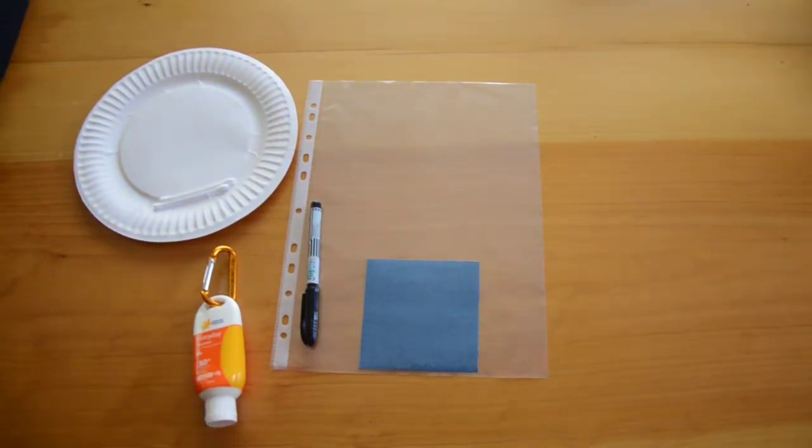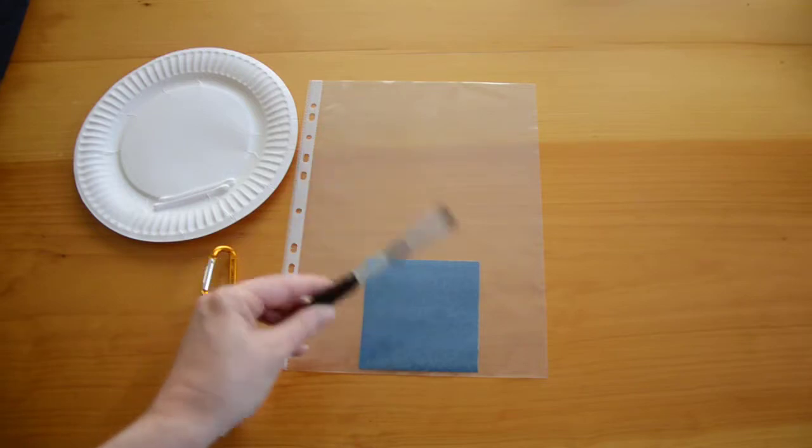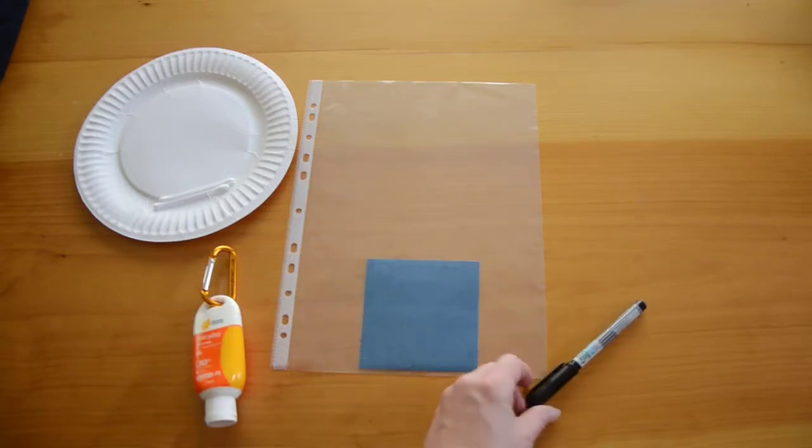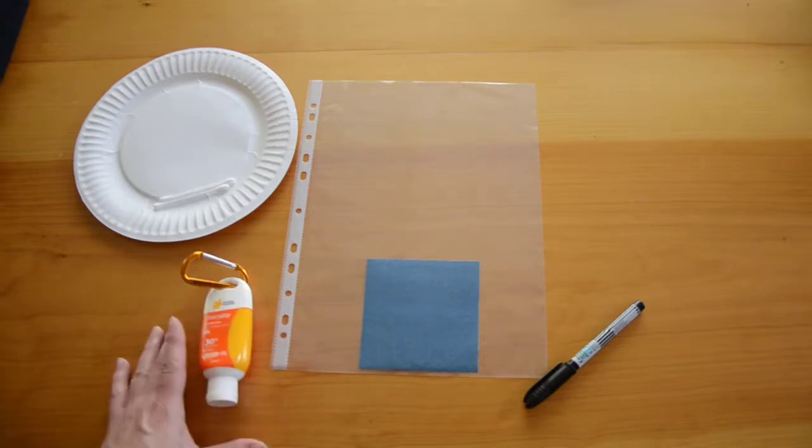So in this version, instead of getting the students to just draw with the pen, you can do it in two ways. You can ask them to draw a picture and then fill in the picture with the sunscreen, or you can get them to just draw with the sunscreen itself. And so I might just do a little quick drawing right now.